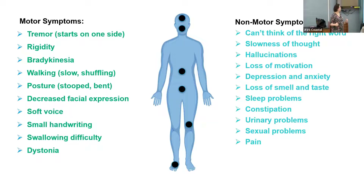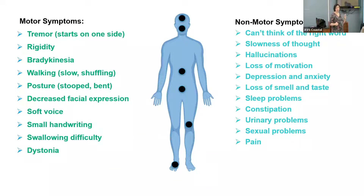Constipation is very common — all of us know how to treat it, so if you're having this problem, don't be embarrassed, please ask us. Urinary problems are similar. Sexual dysfunction is also very common and can be embarrassing to talk about, but if this is something you want to address, please let us know. Pain comes from joint immobility — patients often have joint pain and neck pain because the stiffness makes those joints really tight and very uncomfortable.